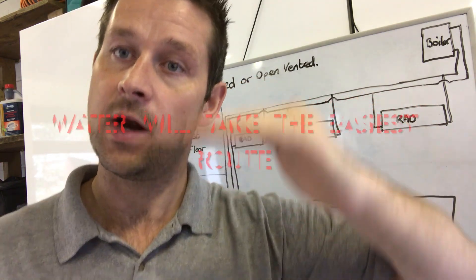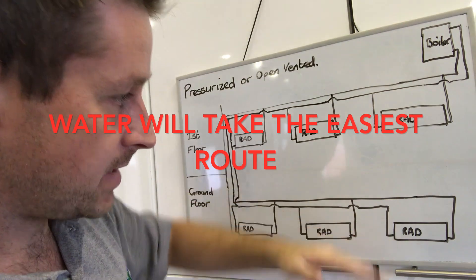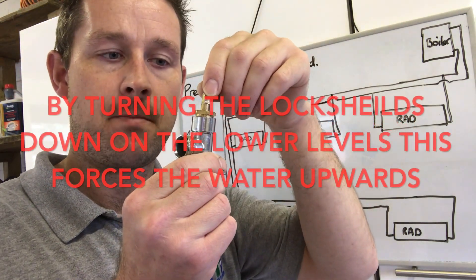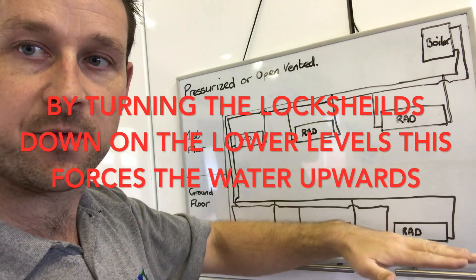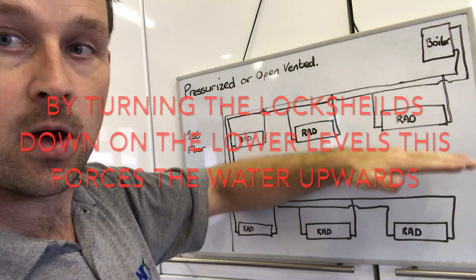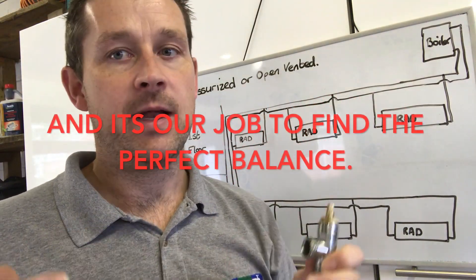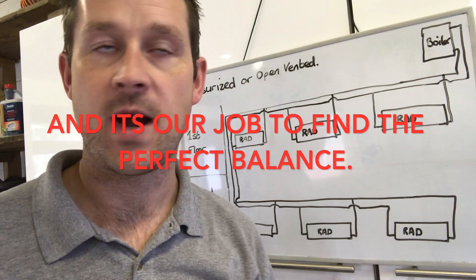What we've got to do is the downstairs radiators, we actually turn these down so that we've only got a trickle of water coming through downstairs, and the upstairs we open up more. Generally, the best practice to start with, if you're having a problem with a radiator or a new installation, do all the downstairs radiators.